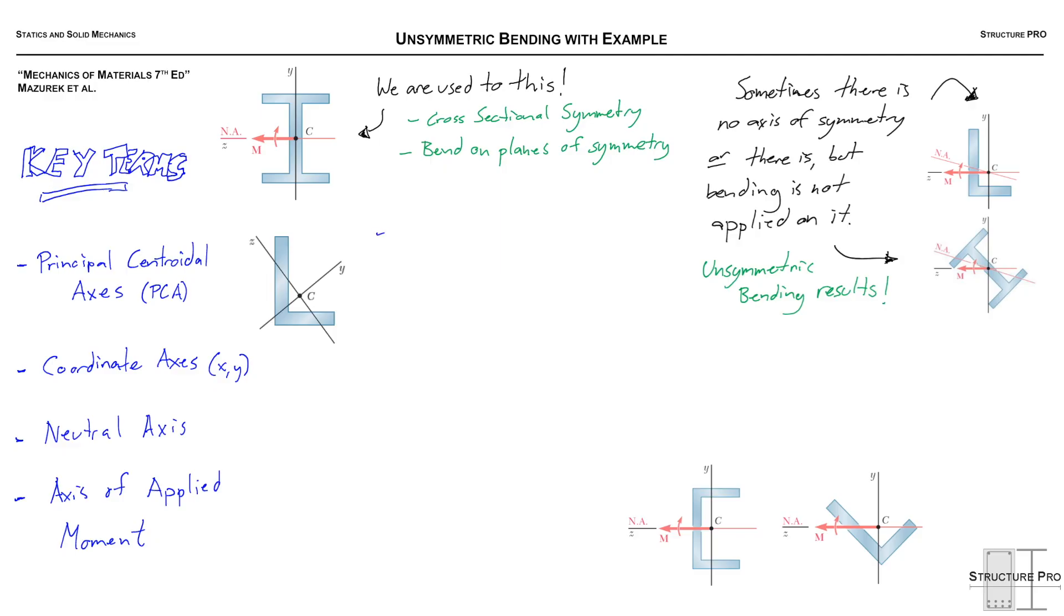So the first one, let's talk about that one first. I'm going to call that PCA for short, principal centroidal axis. And all members have principal centroidal axes. As you can see in this L-shaped cross section here, even though it's not symmetric, it still has PCA. And that doesn't change. It's a property of the section. Symmetry can help you identify the principal centroidal axes sometimes, but not all the time.